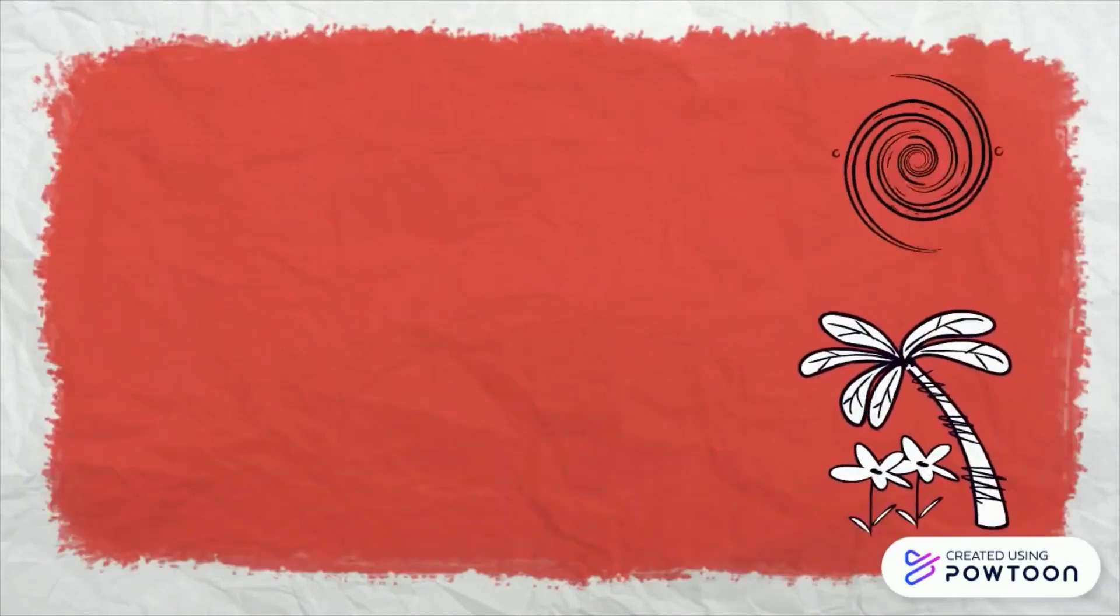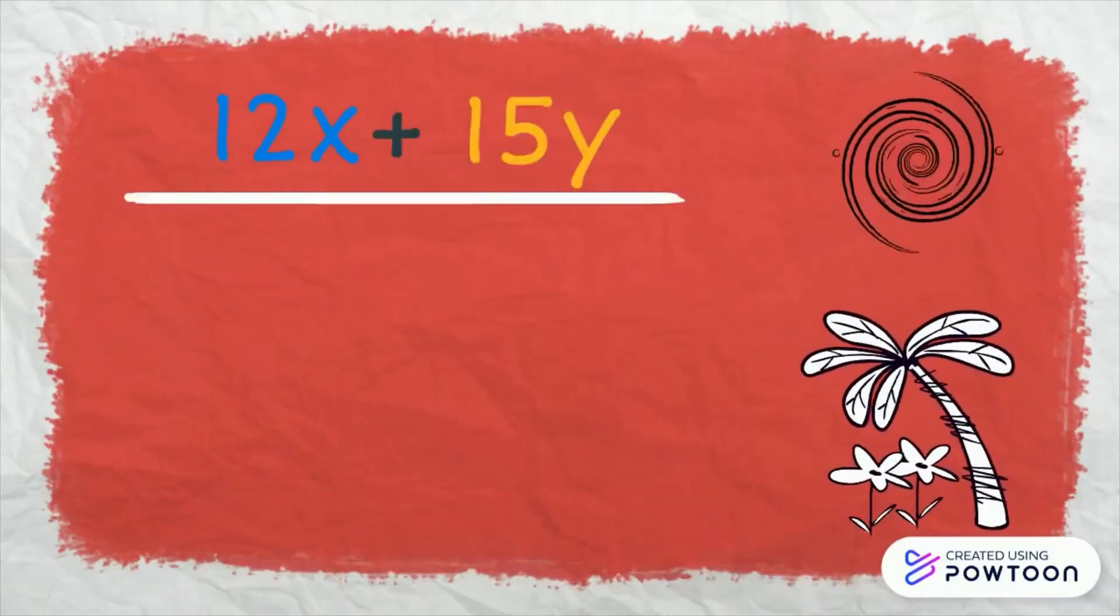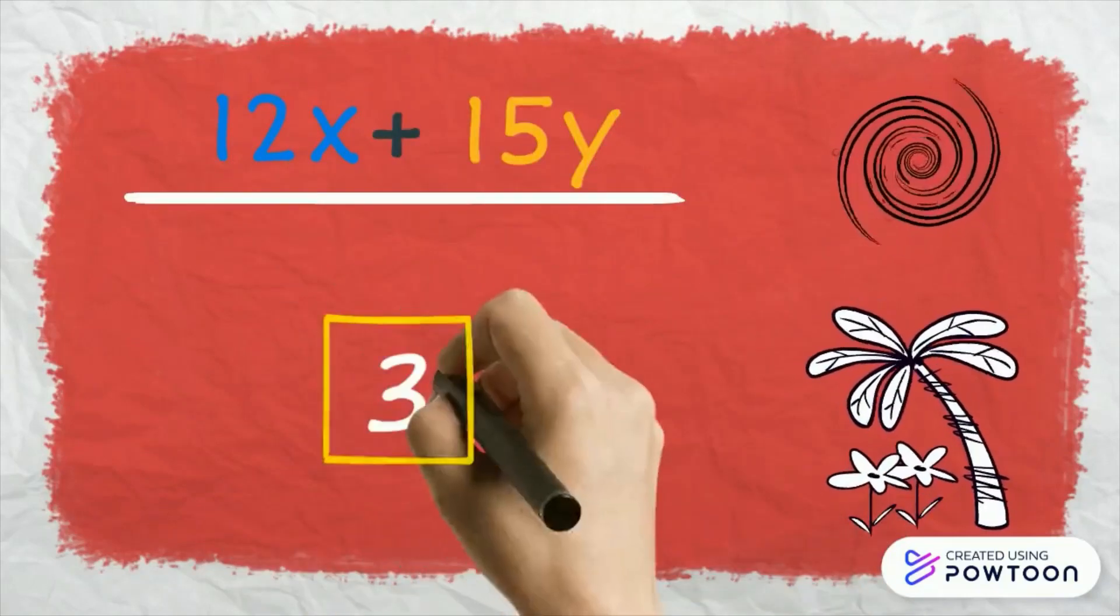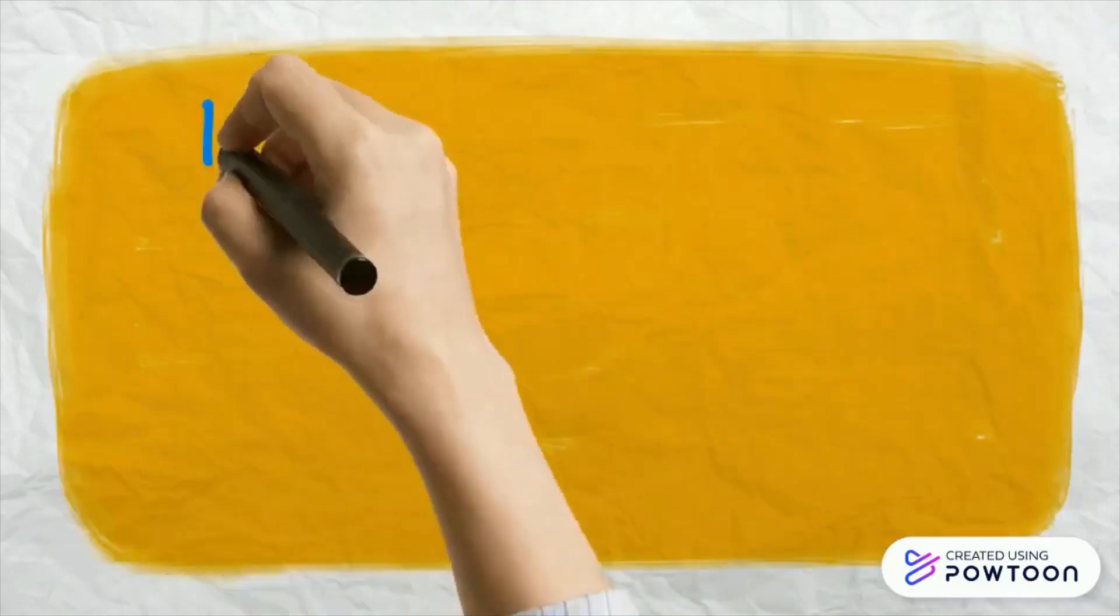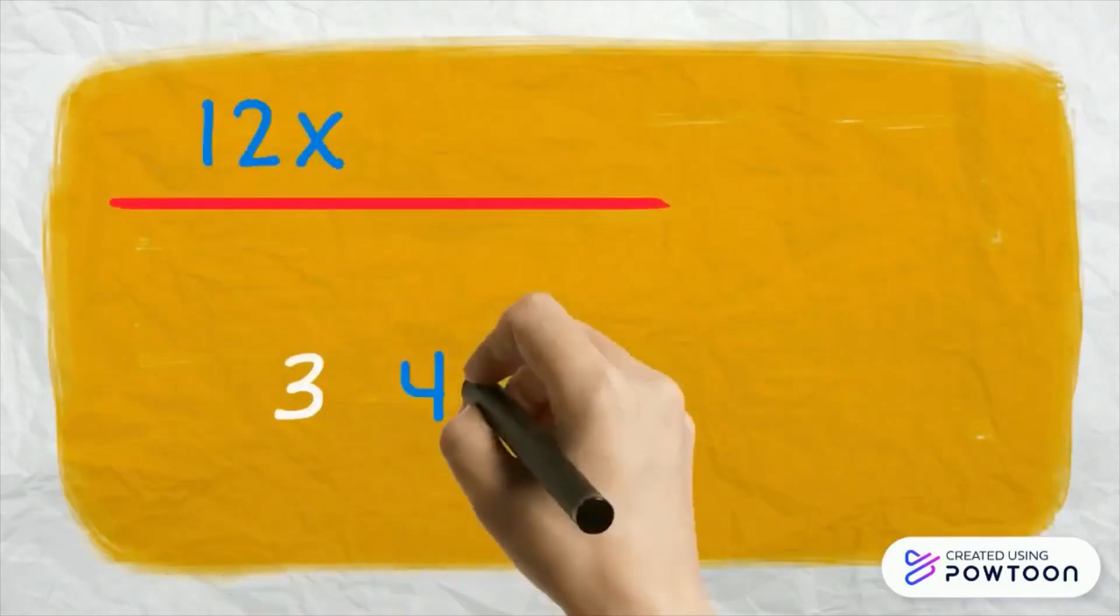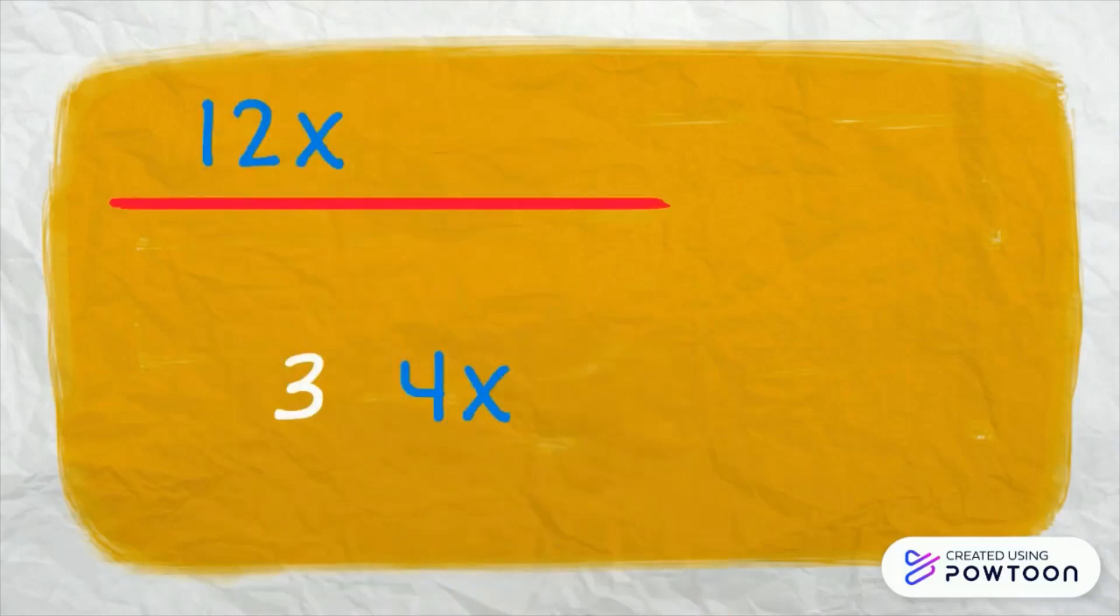Underline the given binomial as a reminder that each term shall be divided by the GCF. 12x divided by 3 is 4x. We use the parenthesis to separate one factor from the other. And it denotes multiplication. Positive 15y divided by 3 is 5y.